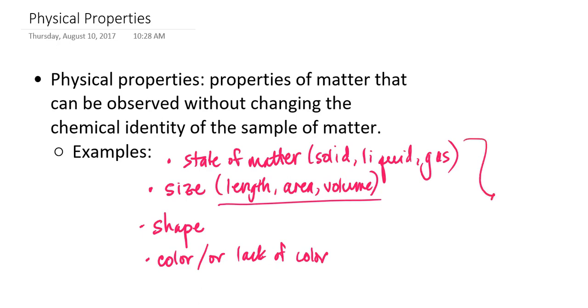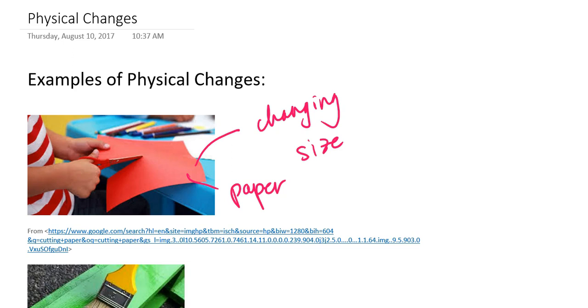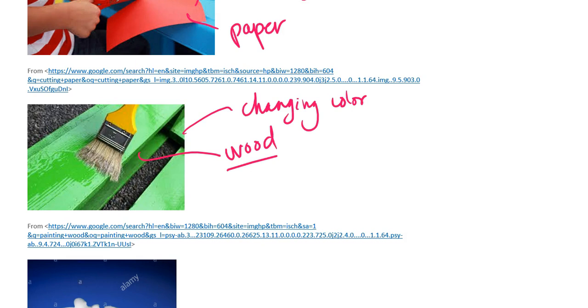Now if any of these things change, then we call that associated change a physical change. For example, if I cut a piece of paper, I'm changing the size of the piece of paper, but the fact that I've cut it doesn't change that it's still paper — so that's an example of a physical change. If I paint something — say, underneath this green paint is wood — if I paint it green then I've changed the color of the wood, but that doesn't change the fact that underneath that coat of green paint there's still wood present. So once again, that makes this a physical change.